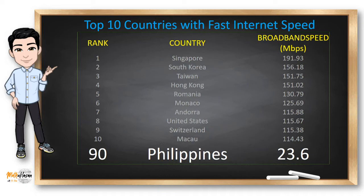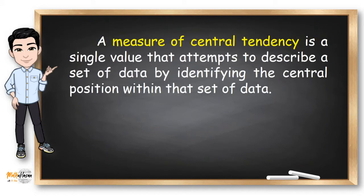That's because these data were described using measures of central tendency. Measures of central tendency are sometimes called measures of central location. This measure is a single value that attempts to describe a set of data by identifying the central position within the set of data.